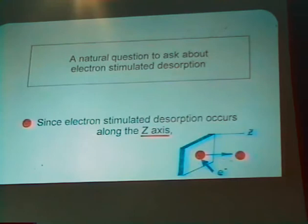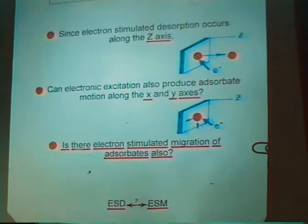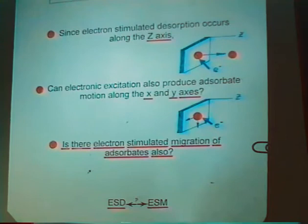So a natural question to ask about electron-stimulated desorption is, since electron-stimulated desorption occurs along the z-axis when the excitation takes place, can we also imagine that the electronic excitation will cause adsorbate motion which has components along the x and y-axis? Is there electron-stimulated migration of adsorbates also? Is the comparable electron-stimulated migration phenomenon present in which lateral motion occurs rather than desorption from the surface?